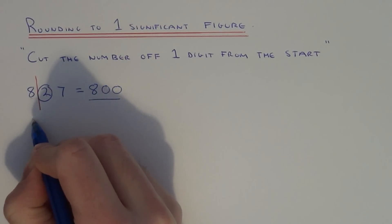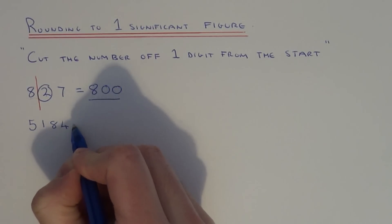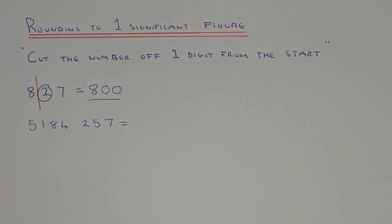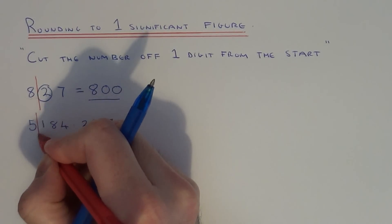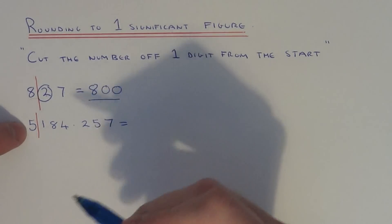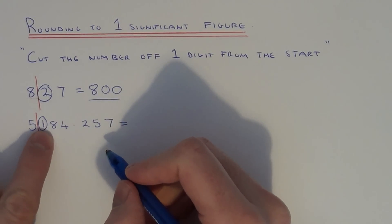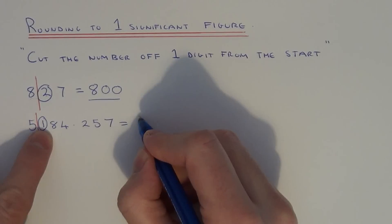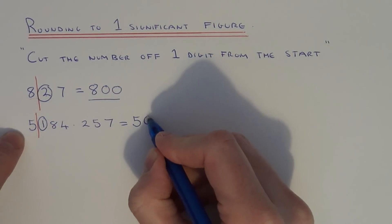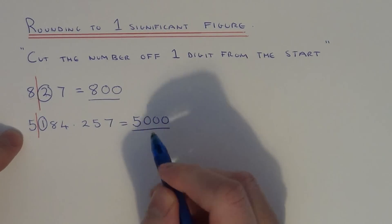Let's go with another example. This time let's do 5184.257, and again round it off to one significant figure. So we cut it off one number after the start of the number. We're either going to leave it as 5 or round it up to 6. Since the next digit is below 5 again, we're going to leave it the same as 5. All we need to do now is fill in 0's up to the decimal point, so our answer is 5,000.